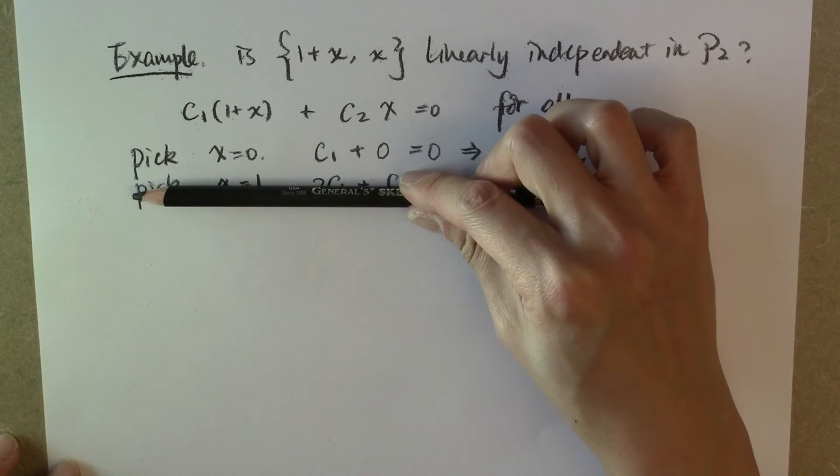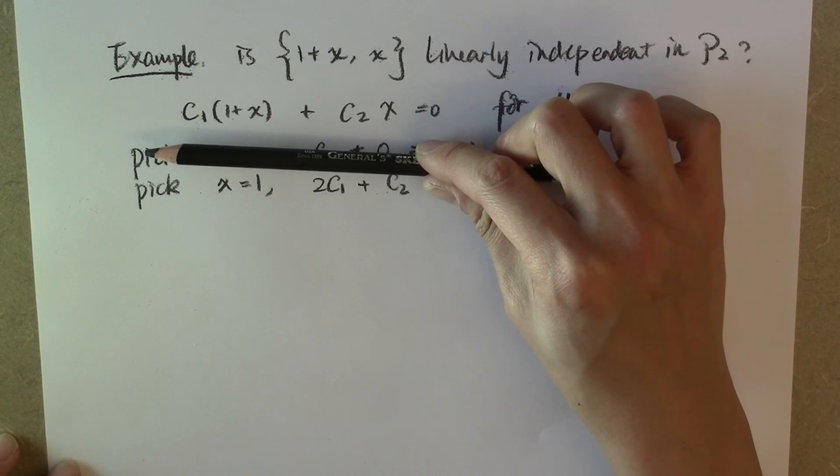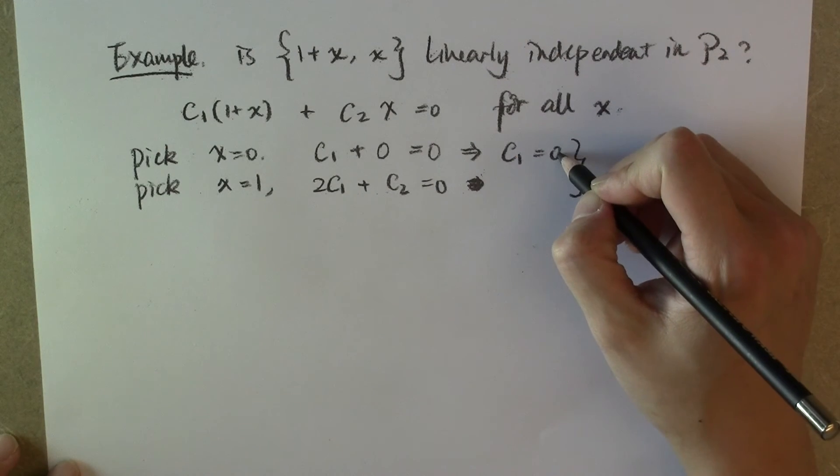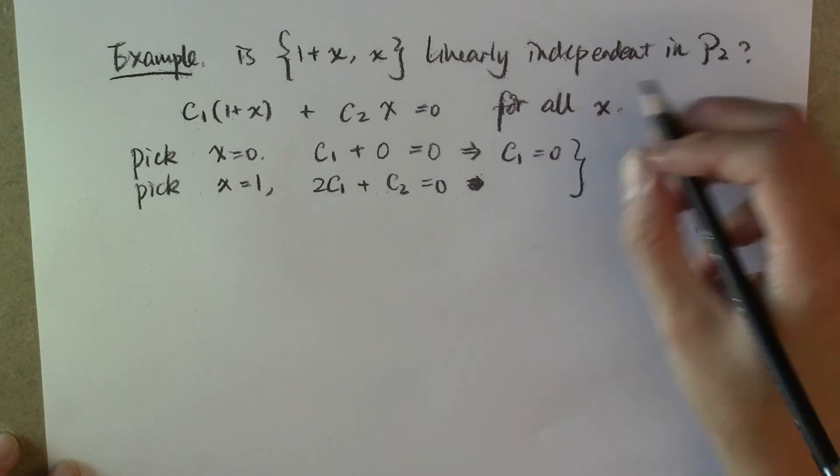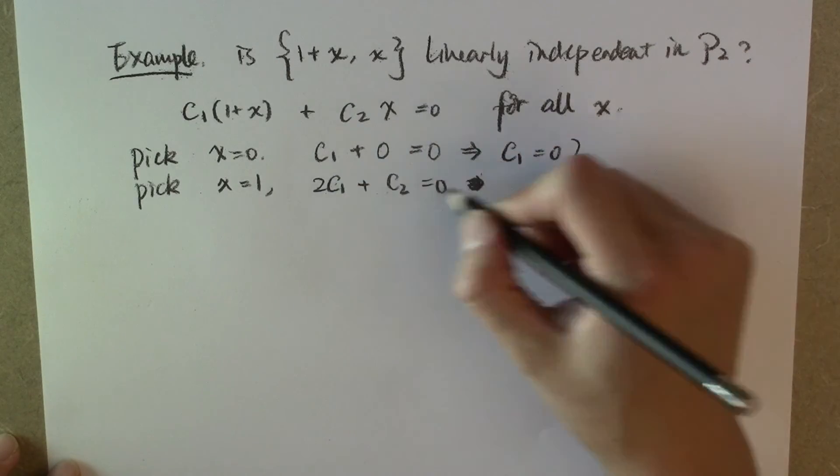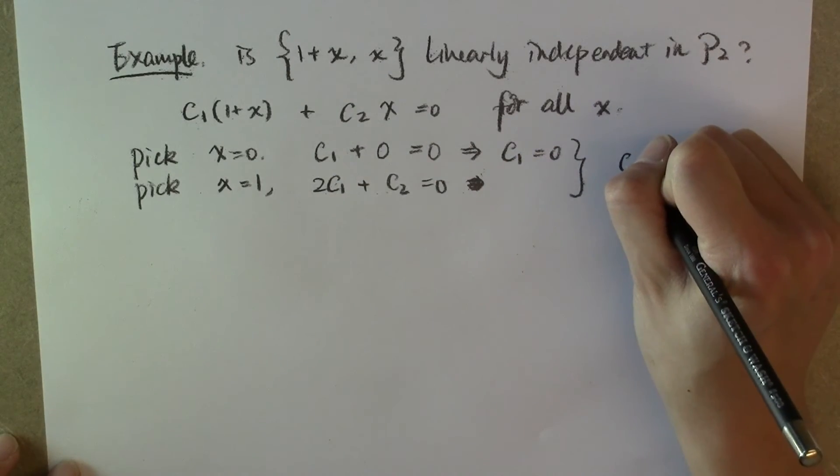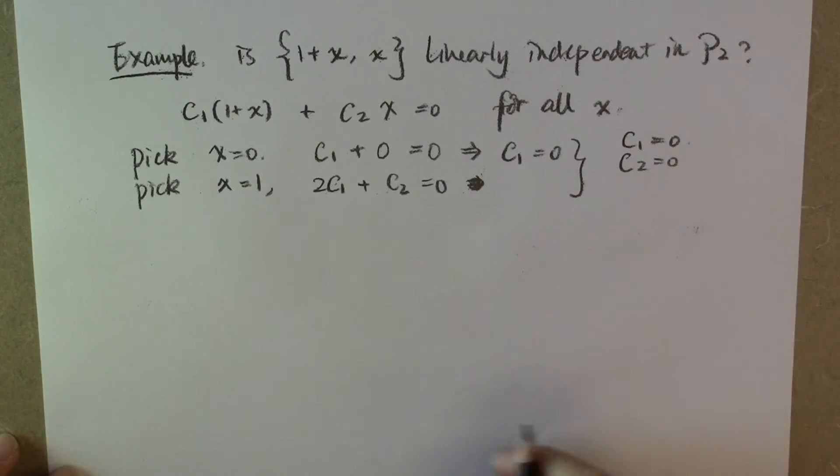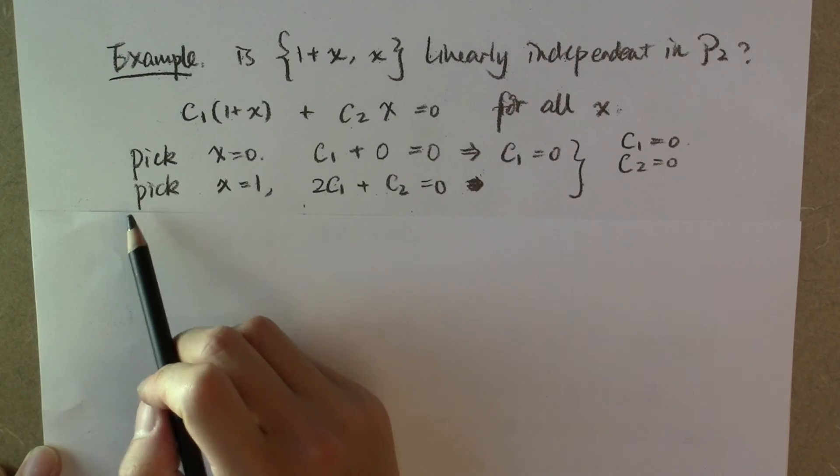Both of these requirements have to be met because this is supposed to be true for all of x. So c sub 1 we know must already be zero, and if this has to be true, then both c sub 1 and c sub 2 have to be zero. So what we just got here is...